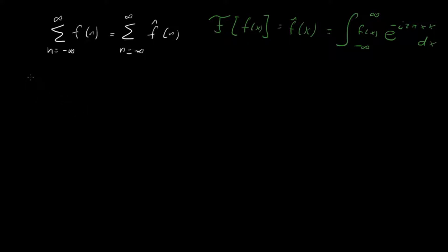I'm going to start by rewriting our f hat in terms of this as a Fourier transform. So this is going to be integral minus infinity to infinity f of x e to the minus i 2 pi x k dx.